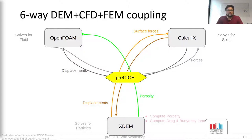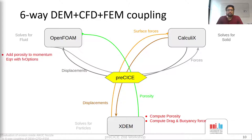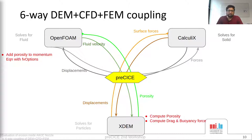XTM computes the porosity and sends it as a volume field to OpenFOAM. The particles are modeled in the fluid as porosity, which is an explicit drag injected through FV options. Then XTM receives the volume field, fluid velocity, and along with some hard-coded fluid properties, it computes the drag and buoyancy acting on the particle and solves for the particle motion.